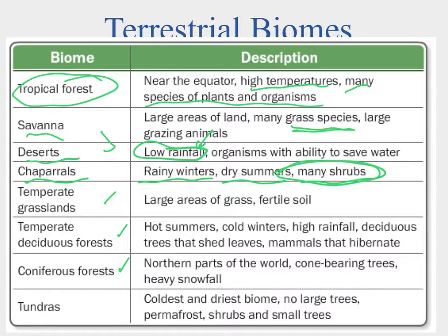Going further we get to coniferous forests — cone-bearing trees, more snow, cooler temperatures — where needle-like leaves help them adapt to temperature changes. Then ultimately we reach the tundra, which is cold and dry, with very few trees and a lot of permafrost, where the ground is permanently frozen. Only certain organisms can get roots down into it to extract water.